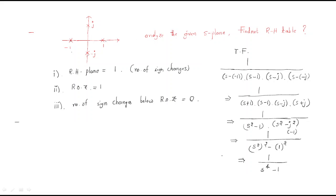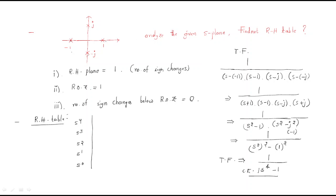From this transfer function, we construct the RH table. The characteristic equation is s⁴ − 1. The table starts from s⁴ down to s⁰. In the characteristic equation, there is no s³, no s², no s¹ term — only s⁴ with coefficient 1 and s⁰ with coefficient −1. The intermediate rows give zeros.